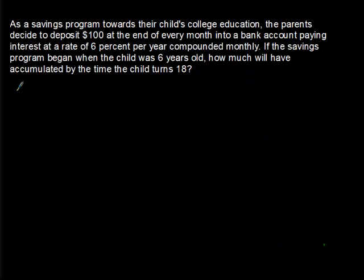Our second problem is going to use the same formula — the future value annuity formula — mainly because we're looking at the future. The problem says: as a savings program towards their child's college education, the parents decide to deposit $100 at the end of every month into a bank account paying 6% per year compounded monthly. The savings program began when the child was six years old. How much will it have accumulated by the time the child turns 18?